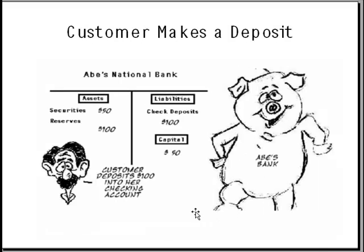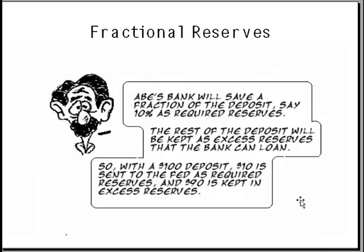Suppose a customer comes in and makes a deposit of a hundred dollars. Now Abe can list this hundred dollars as a reserve and as an asset, and of course it's also a liability since he owes the customer that hundred dollars. Notice that his capital has remained unchanged.